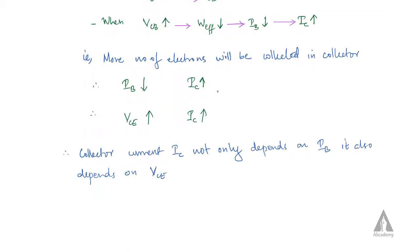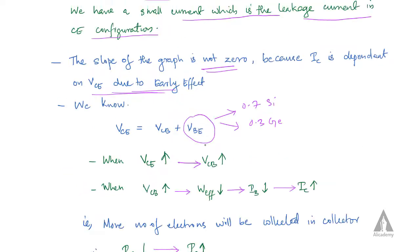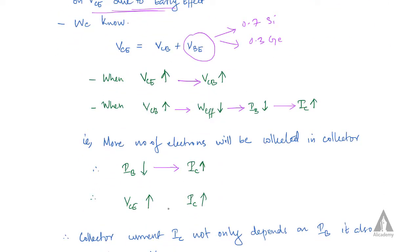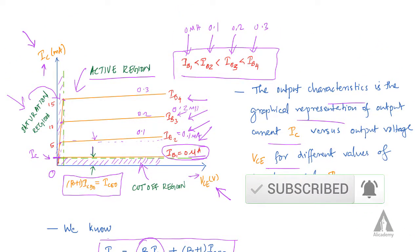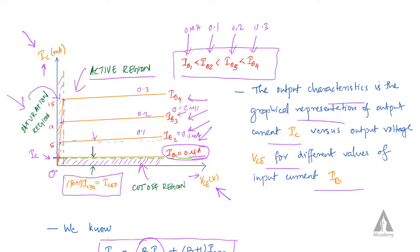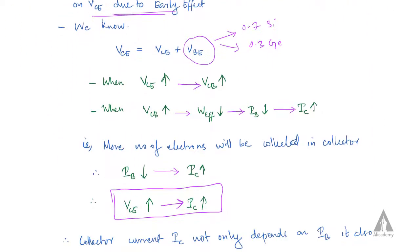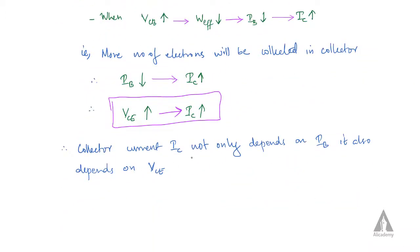As base width decreases, more of the IB current will be collected by the collector, causing the collector current IC to increase. Ultimately, the collector current IC not only depends on IB, but also depends on VCE.